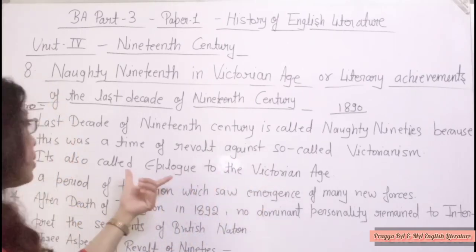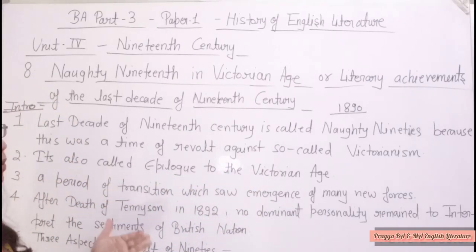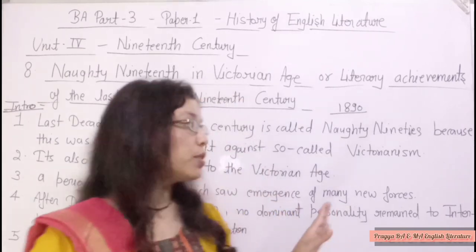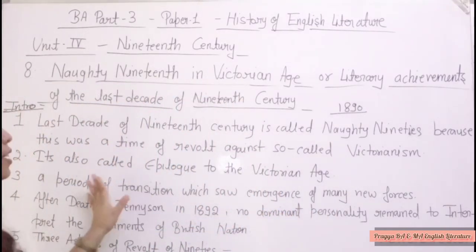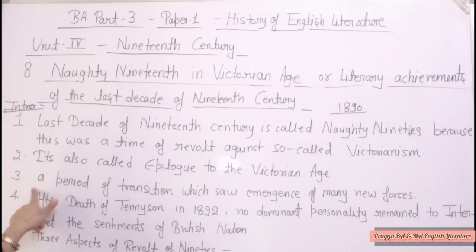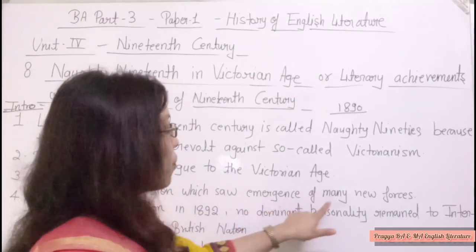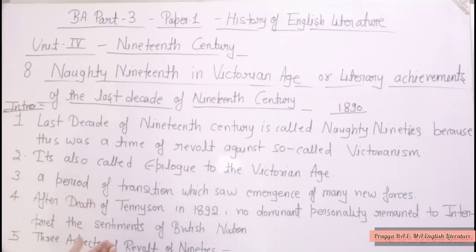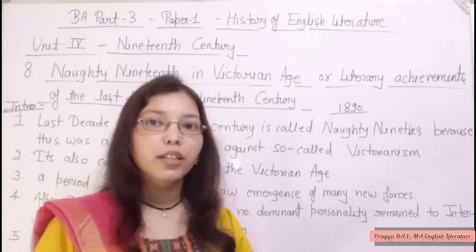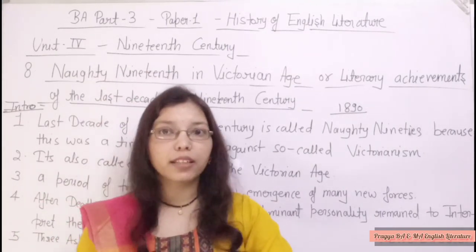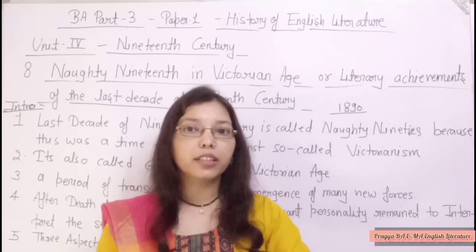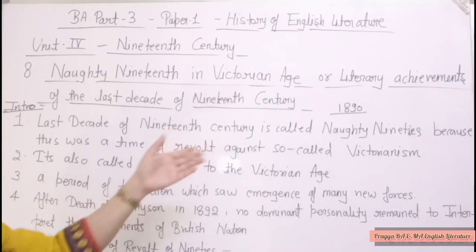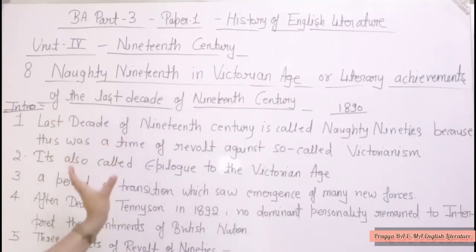The term 'epilogue to the Victorian age' means conclusion — after the Victorian age, the timing of the modern age starts. This was the ending time of Victorian age. It was also a period of transition which saw the emergence of many new forces, just as the pre-Romantic time is a transition period, the ending of the 1890s is also a transition period.